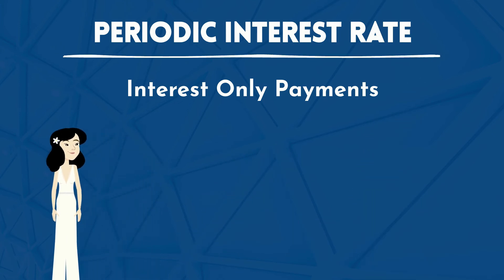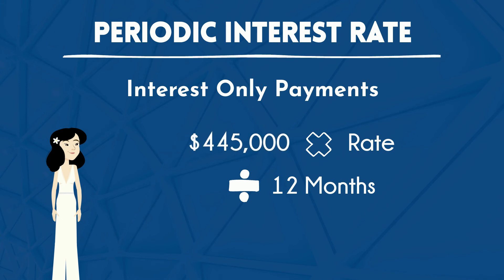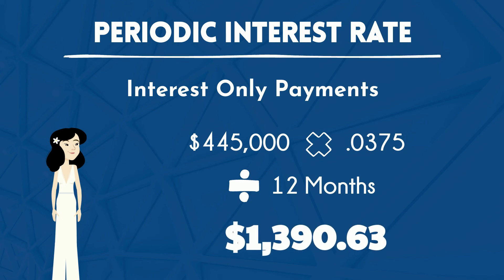For interest-only, the formula is loan amount times rate equals payment, then divide by 12 months. So we divide $16,687.50 by 12 months to get $1,390.63. This would be her interest-only payment.